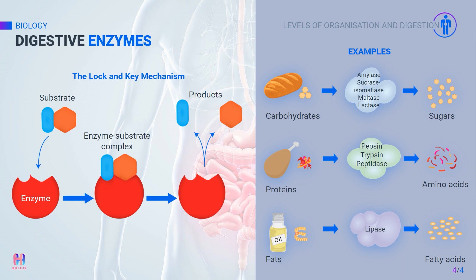Examples of enzymes found in our digestive system: carbohydrases are enzymes that convert carbohydrates into simple sugars. Amylase is an example of a carbohydrase — it breaks down starch into maltose. Amylase is mostly found in the saliva and is produced by the salivary glands, pancreas, and the small intestine. Proteases are enzymes that act on proteins and break them into amino acids; these enzymes are produced in the stomach, the pancreas, and the small intestine.